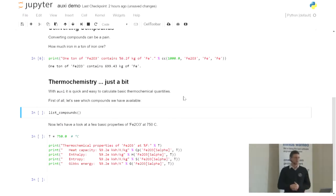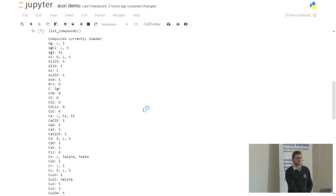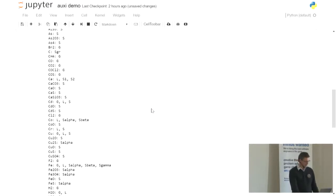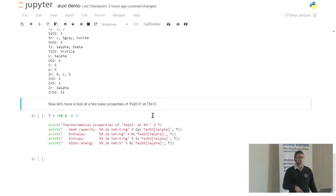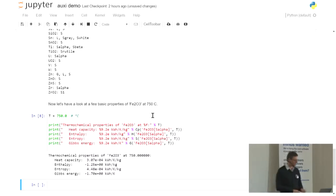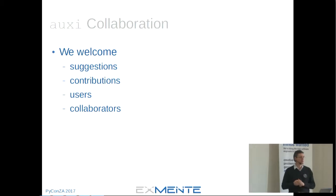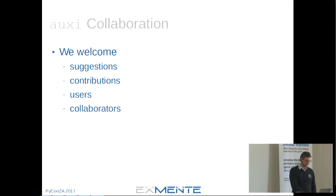Auxi can also do a little bit of thermochemistry — it has a small database of compounds with heat capacity, enthalpy, and related properties. You can modify it and add your own compounds. Simple calculations that would usually take junior metallurgical engineers quite a bit of time to structure in Excel can be done quickly. If anybody likes chemistry, you're welcome to contribute to the code and send pull requests — any help would be very welcome.